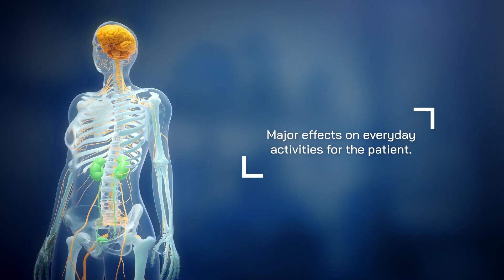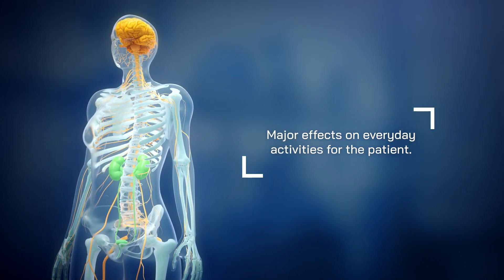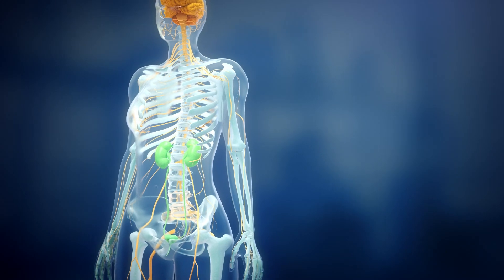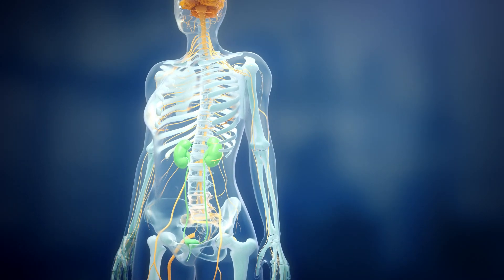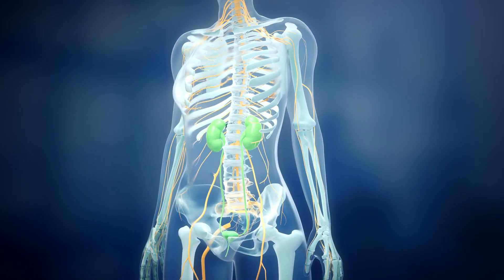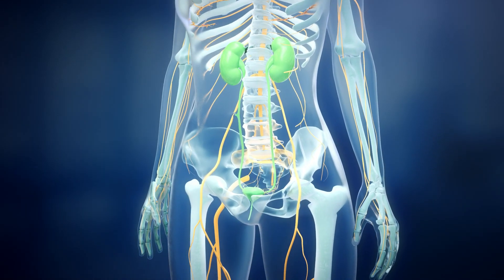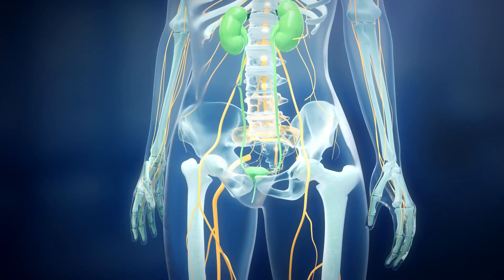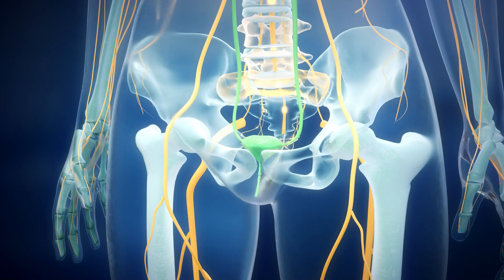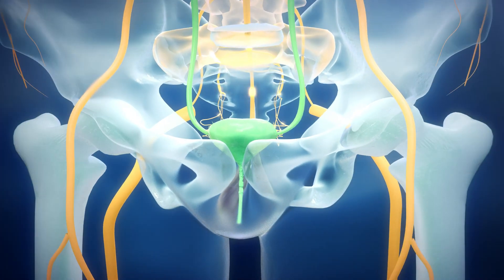This condition can have major effects on everyday activities for the patient. The active micturition is controlled by a complex neural circuit, which involves a variety of afferent and efferent neural pathways, reflexes, and central and peripheral neurotransmitters.